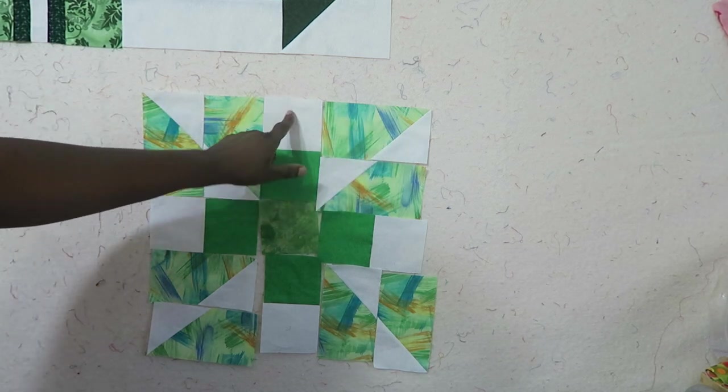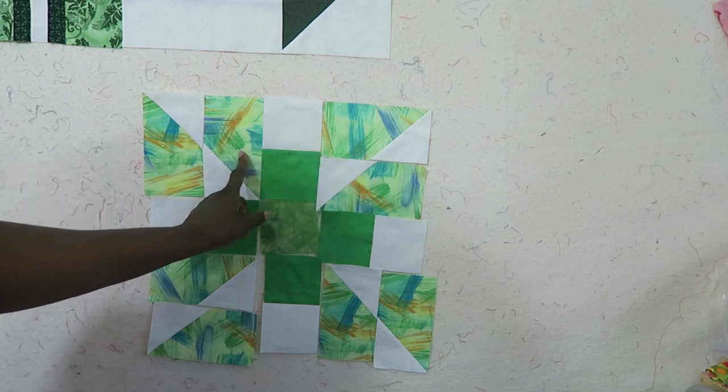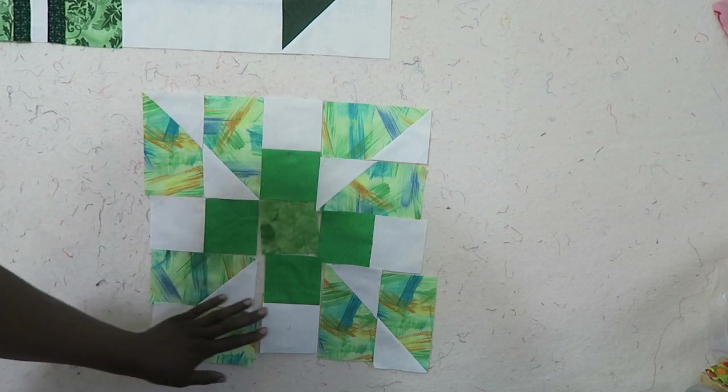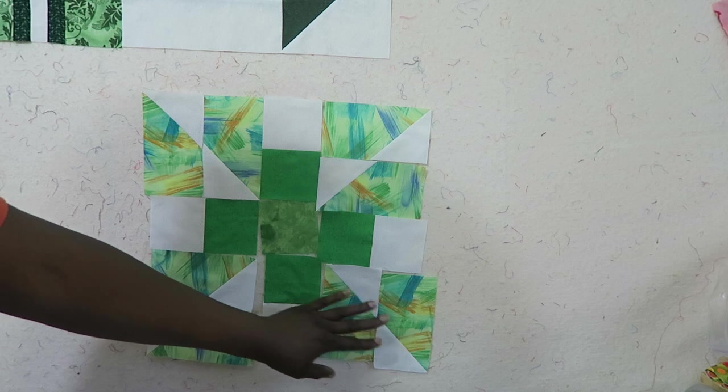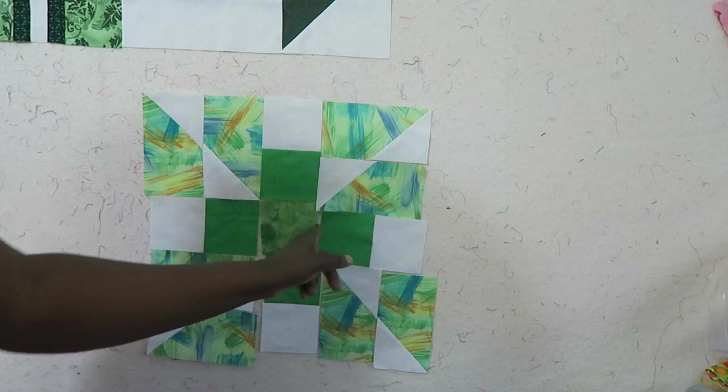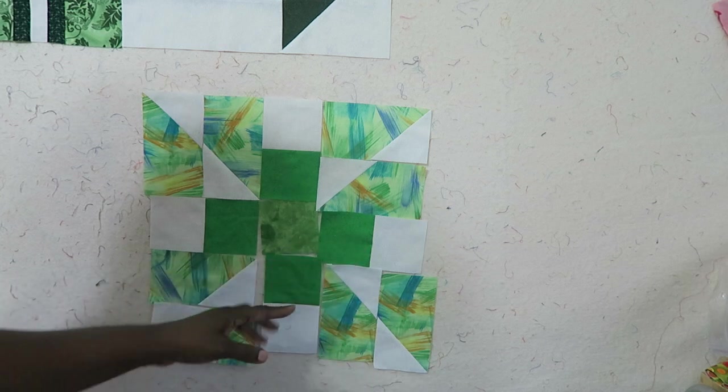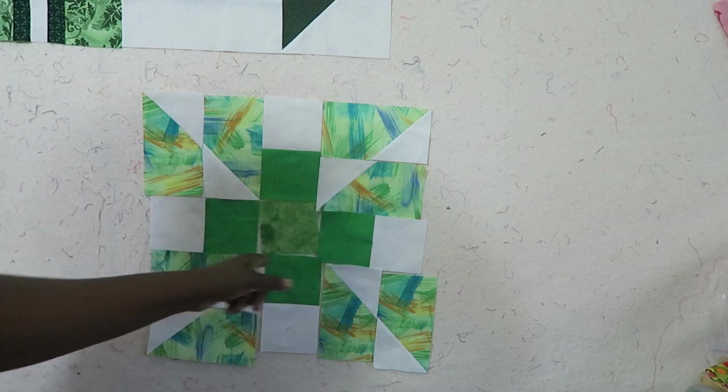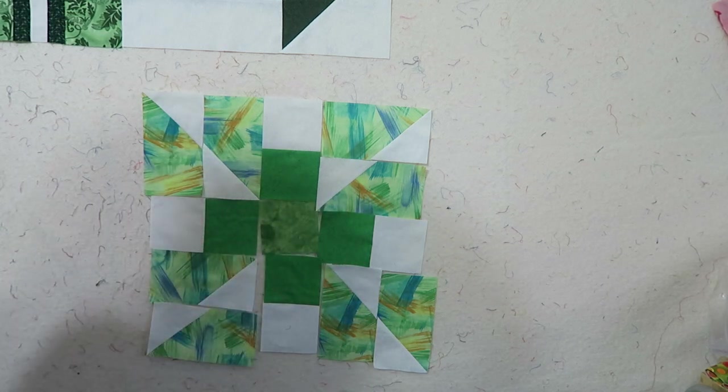I am going to sew these into pairs and then I'm going to sew the green and white piece in between. I'm going to do that for the top and the bottom row the exact same thing, and then I'm just going to connect these two seams here and I'll have my center row. Then I can sew my rows together. Since it's just basic sewing now I will go ahead and do that sewing and come back.